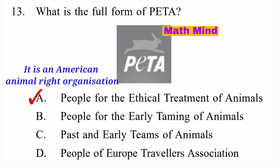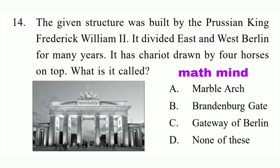Question No. 14. The given structure was built by Prussian king Frederick William II. It divided East and West Berlin for many years and has a chariot drawn by four horses on top. What is it called? Option B is correct: Brandenburg Gate.